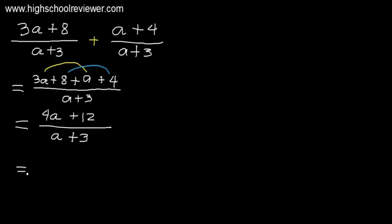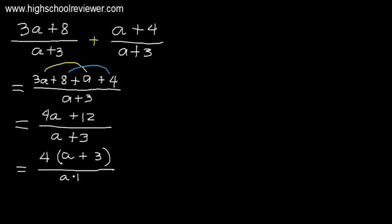Before we say that this is the final answer, let's check first if we can still simplify the numerator and denominator. So for 4a plus 12, we can see that 4 is common between 4a and 12. We are going to take out 4. Once we take out 4, what will be left is a, since 4 multiplied by a is 4a. And then 12 divided by 4 is plus 3.